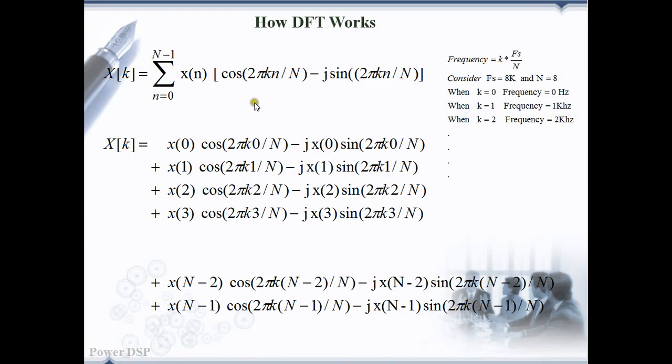There are two set of waves. One is sine waves and the other one is cosine waves. Based on sampling frequency, set of sine waves and cosine waves are generated. The frequency of sine and cosine waves are given by k into fs by N.